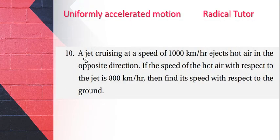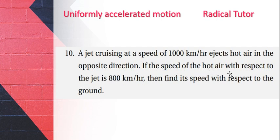Question number 10. A jet cruising at a speed of 1000 km per hour ejects hot air in the opposite direction. If the speed of the hot air with respect to the jet is 800 km per hour, then find its speed with respect to the ground.